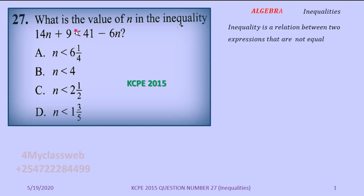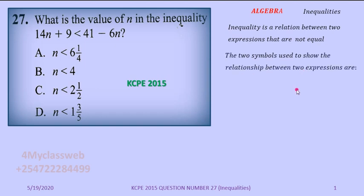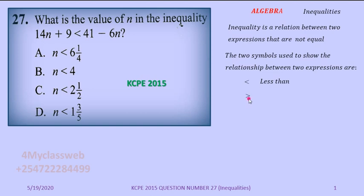In between the two expressions there is a symbol. The two symbols used: the first has the narrow side on the left and the wider side on the right, meaning whatever is on the left is less than whatever is on the right — that symbol is called 'less than.' The second symbol is the opposite: wider on the left and narrow on the right, meaning 'greater than.'